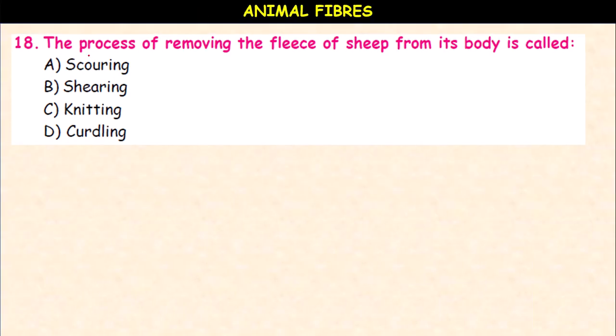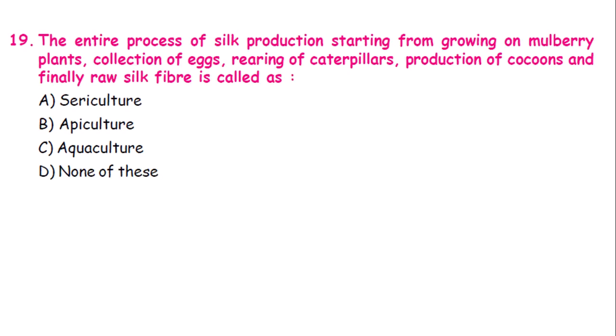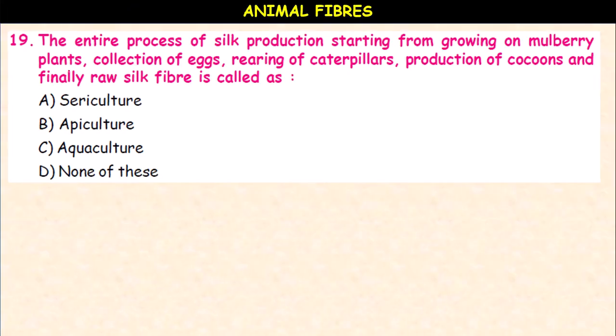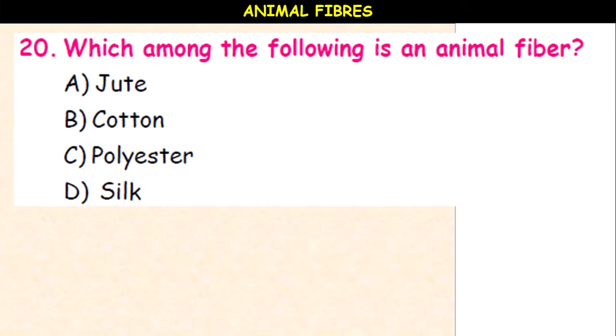The process of removing the fleas — secondary hairs — of sheep from its body is called scouring, shearing, knitting, or carding? It is shearing. The entire process of silk production starting from growing mulberry plants, collection of leaves, rearing of caterpillars, production of cocoons, and finally raw silk fiber is called sericulture, apiculture, aquaculture, or none of these? The entire process is called sericulture.